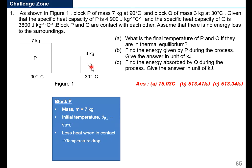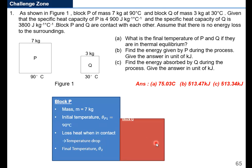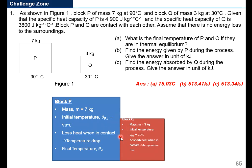Block P initial temperature θP1 is 90 degrees Celsius. It will lose heat when in contact with Block Q because Block Q is only 30 degrees Celsius — heat will transfer from P to Q. When heat transfers from P to Q, energy is lost and temperature will drop. Block Q has a mass of 3 kg with initial temperature θQ1 of 30 degrees Celsius. When heat transfers to Q, it absorbs heat and temperature rises. At thermal equilibrium: no net heat transfer, and the final temperature is the same for both blocks.